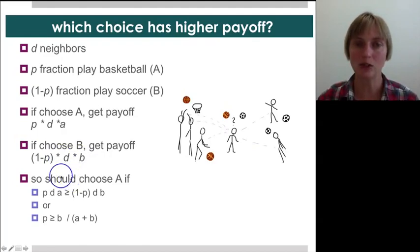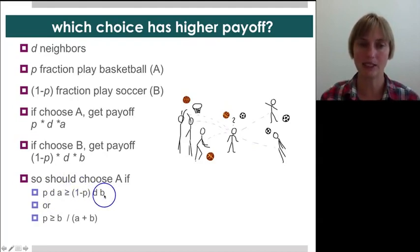So, this means that he should choose A if P times D times A is greater than or equal to 1 minus P times D times B. These, you know, payoff from soccer and payoff from basketball. And you can reformulate this so that it's, he will be playing basketball if the proportion of his friends playing basketball is greater than or equal to B, which is the payoff for soccer, divided by A plus B. Kind of the sum of the payoffs for either choice.